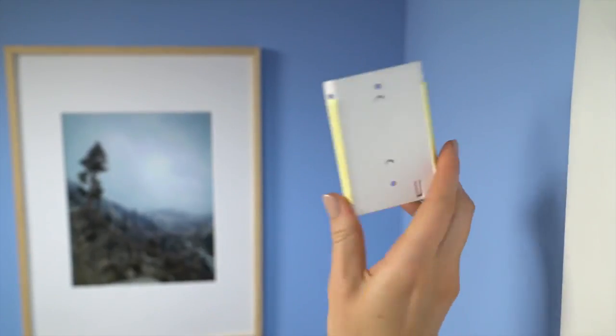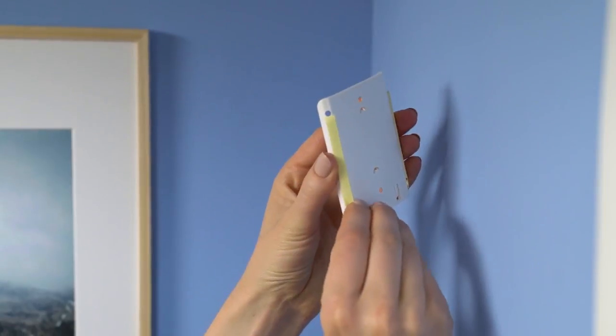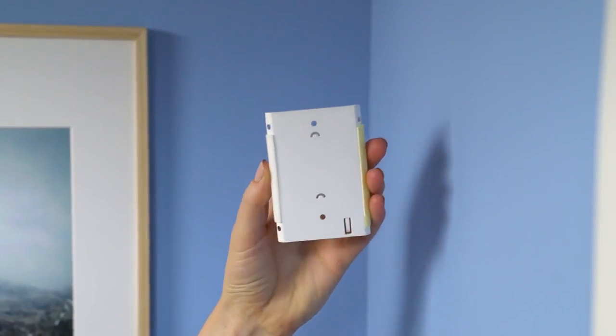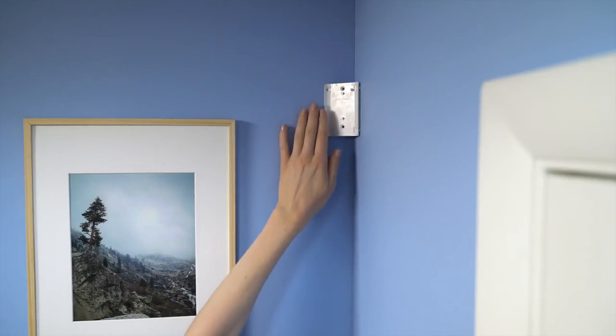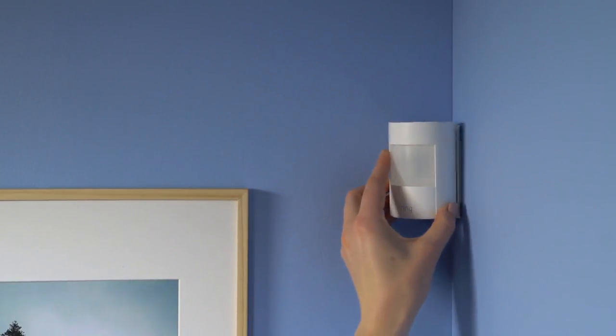Next, before you stick the sensor on the wall, let's plan the setup. The base goes on the wall first. Then place the sensor into the base.